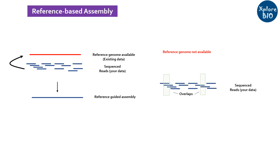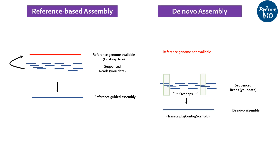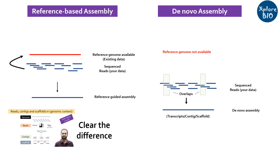But what if you do not have a reference genome sequence for your organism of interest available? You can still align and assemble these sequences based on the overlapping regions of the reads generated without a reference — assembling the reads to longer contigs, scaffolds, and chromosomes without the reference information. This is termed de novo assembly, meaning "from the very beginning."